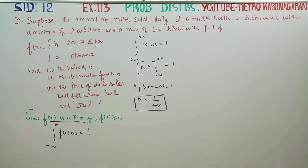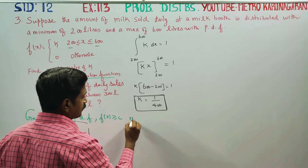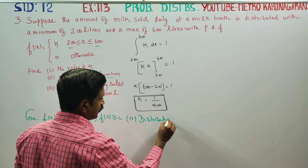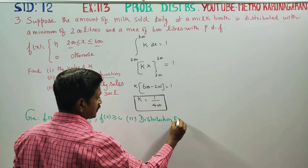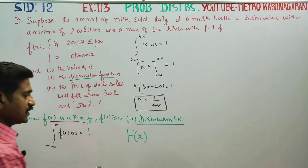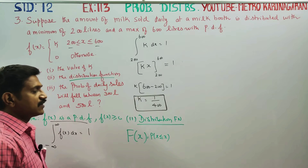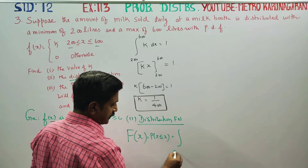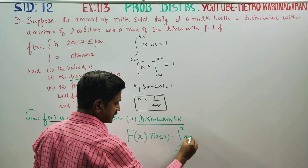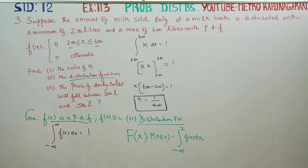After finding k, we move to part 2: finding the distribution function, or cumulative distribution function (CDF). The distribution function is capital F(x), which equals the probability of X less than or equal to x. The formula is: F(x) equals integral from minus infinity to x of f(x) dx.